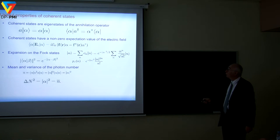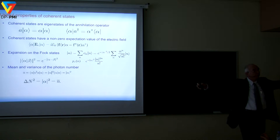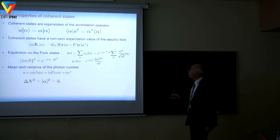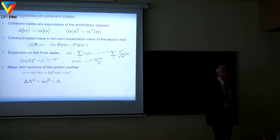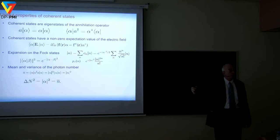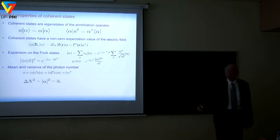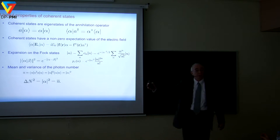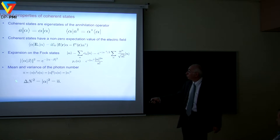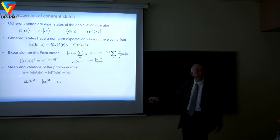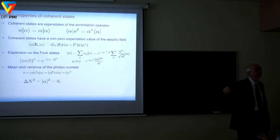You can expand the coherent state on Fock states. The photon number distribution of a coherent state — the probability for having n photons — is given by a Poisson distribution. For large average values, this Poisson distribution is essentially a Gaussian centered at the average photon number, which is |α|². The variance of the photon number equals the average value, so the relative dispersion goes like one over the square root of the average photon number. For higher and higher photon numbers, the energy is more and more defined in relative terms — for large n, these states are basically classical states with negligible dispersion both in phase and in photon number.